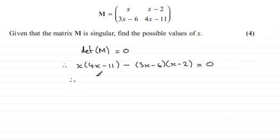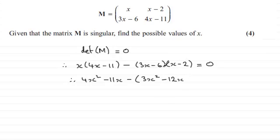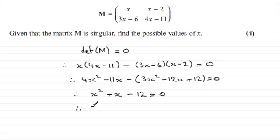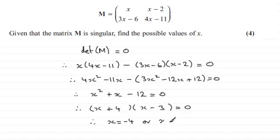Working this out, we've got 4x squared minus 11x, and then we subtract a bracket containing 3x squared minus 6x minus 6x plus 12, which gives minus 12x plus 12, and that equals zero. Tidying this up: 4x squared minus 3x squared is x squared, minus 11x plus 12x is plus x, minus 12 equals zero. Factorising this quadratic gives (x + 4)(x minus 3), leading to x equals minus 4 or x equals 3.